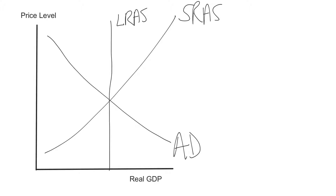In the static model, we make two simple assumptions. First, we assume there is no long-run growth, so the long-run aggregate supply curve stays at this level of GDP — we'll call it 10 trillion. There's no growth, which isn't realistic, but it lets us focus on the adjustment process. Second, we'll call this price level 100. So there's no expected inflation; we always expect to be at 100.